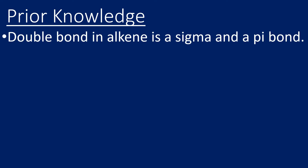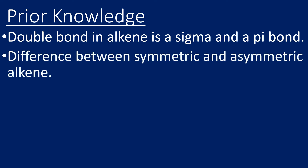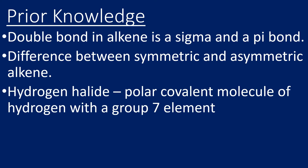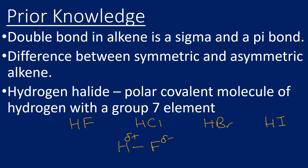Some prior knowledge: the double bond in an alkene is a sigma and a pi bond — they are not two identical bonds. We need to know the difference between a symmetric and an asymmetric alkene. Hydrogen halides are polar covalent molecules. A hydrogen halide is hydrogen bonded to something from group seven: HF, HCl, HBr, HI are all examples. In HF, for instance, F is more electronegative so it's δ− and H is δ+. For all hydrogen halides, X is δ− and H is δ+.